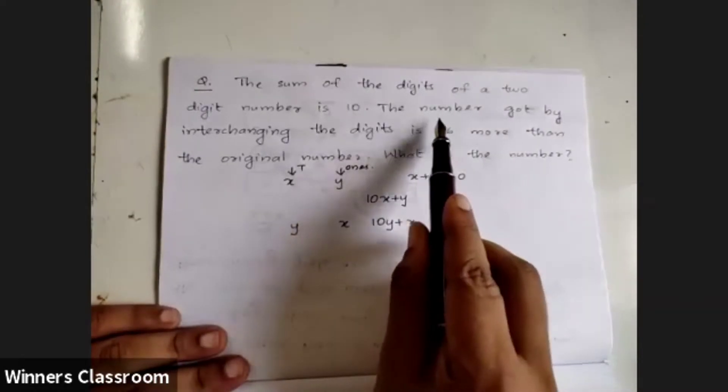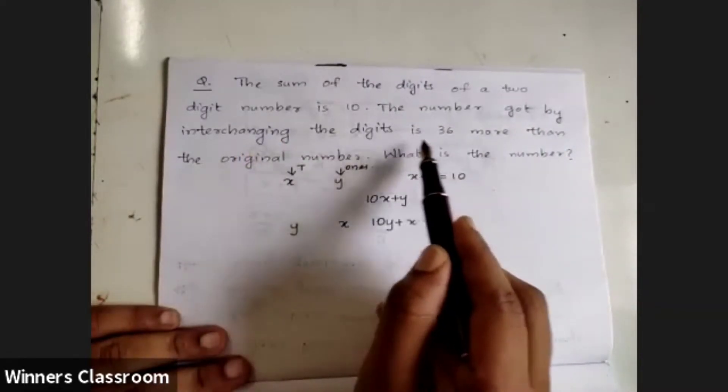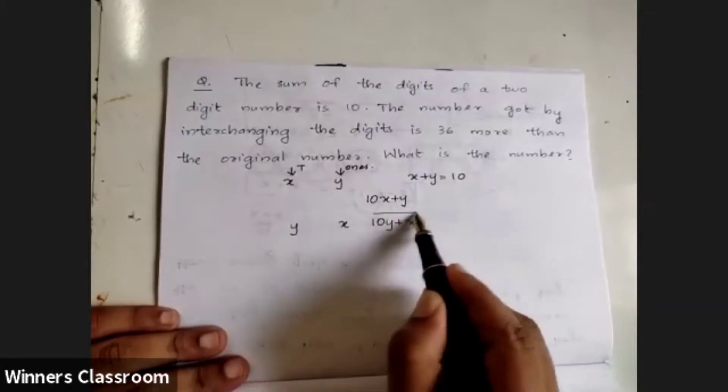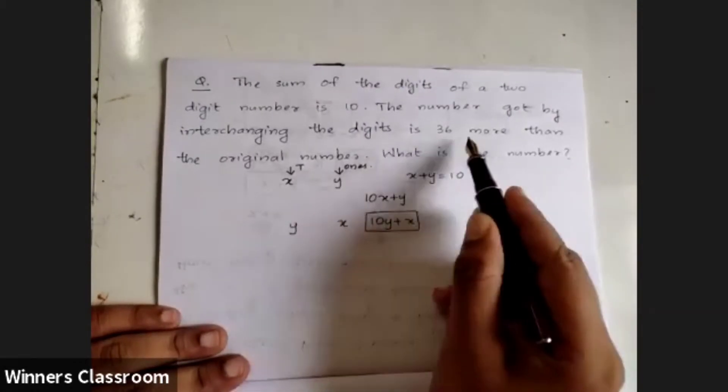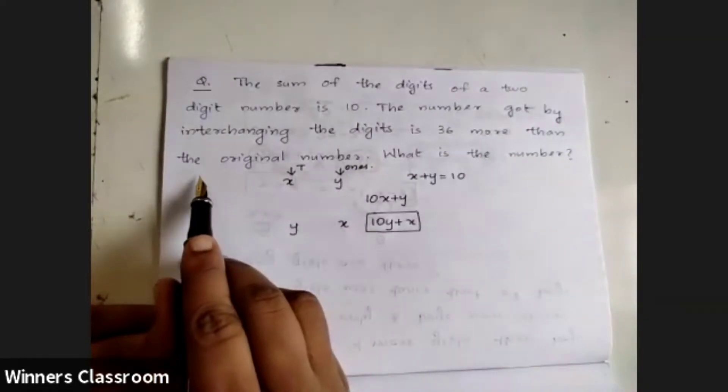The number got by interchanging the digits is 36 more than the original number.